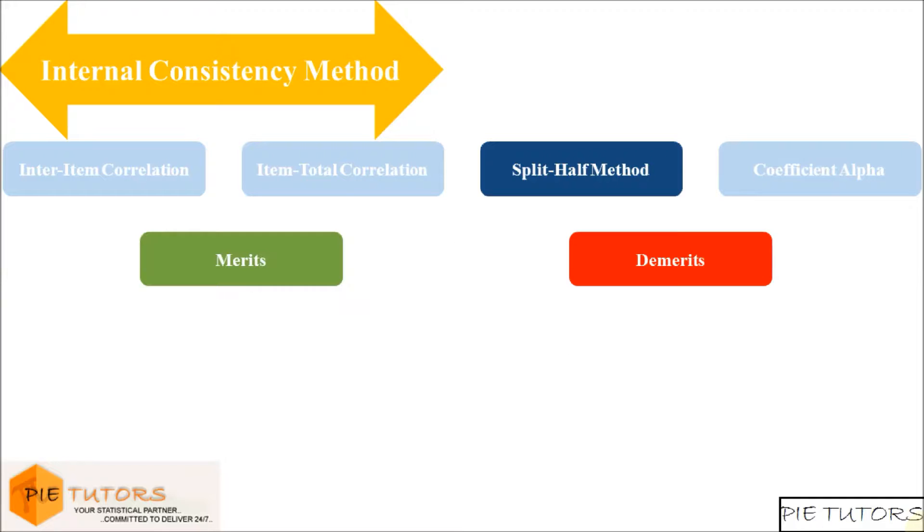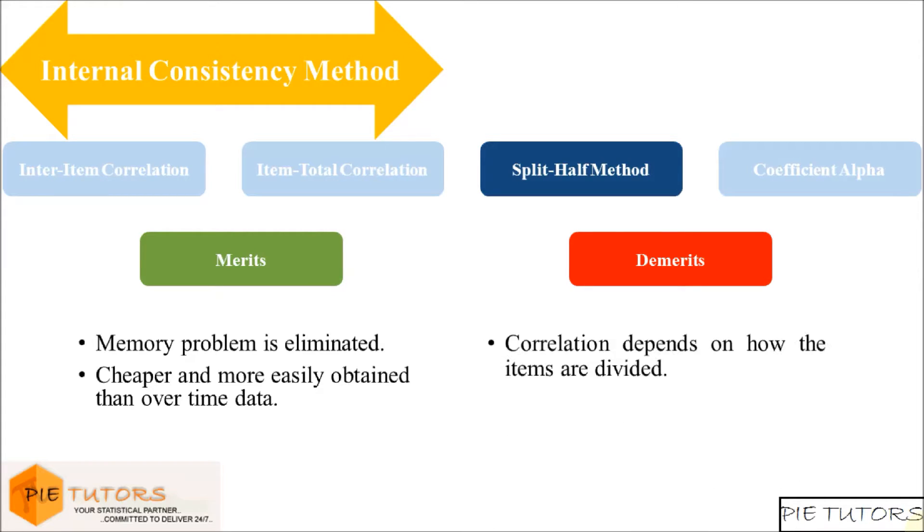This method has some merits and demerits over the other methods we have discussed. The effect of memory discussed previously does not operate with this approach. Another practical advantage of using the split halves is that it is usually cheaper and more easily obtained than over time data. However, the most common disadvantage of the split half method is that the correlation between the two halves will vary slightly depending on how the items are divided.